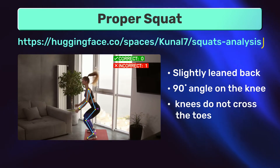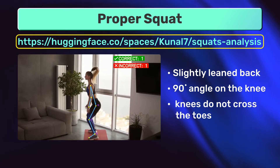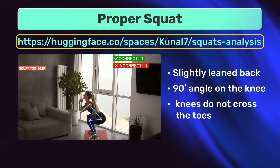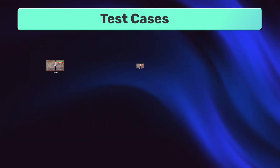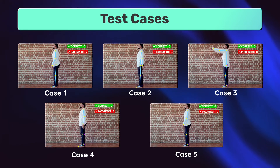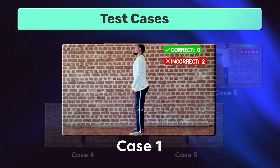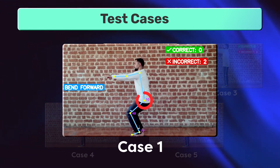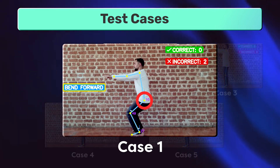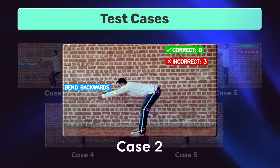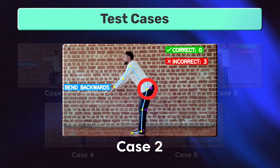You can try out the AI Fitness Trainer web app as well — link in description. We will be observing five test cases, and accordingly the application will provide feedback. First, if the back falls below a threshold, for instance 20 degrees, the app says 'bend forward.' And if it extends too forward, say 45 degrees, the app says 'bend backwards.'